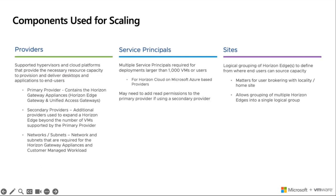Scaling for unexpected spikes and drops in service demand is important for lowering costs, but so is scaling for expected environment constraints. One thing we can expect in this world is that there are going to be unprecedented times. Through providers, service principles, and sites, we can manage the environment more efficiently. We set up the Horizon control plane and Horizon edge to be purpose-built for events that may just come out of nowhere. In most cases, we want to scale out, and I will show a few different examples of how we can do that.